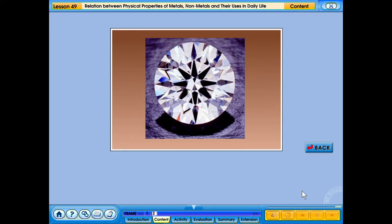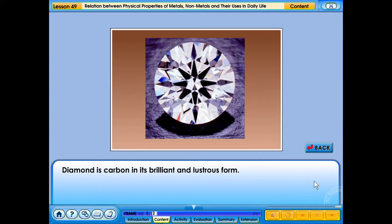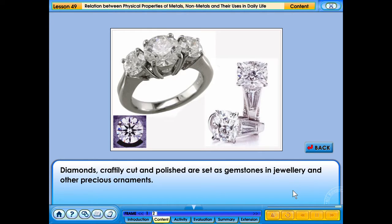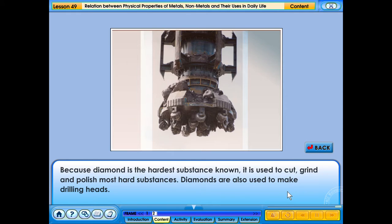Uses of non-metals in daily life. Diamond is carbon in its brilliant and lustrous form. Diamonds, craftily cut and polished, are set as gemstones in jewelry and other precious ornaments. Because diamond is the hardest substance known, it is used to cut, grind and polish most hard substances. Diamonds are also used to make drilling heads.